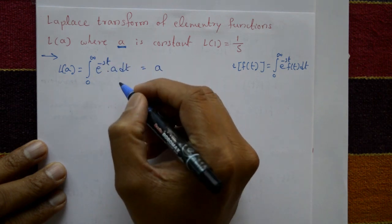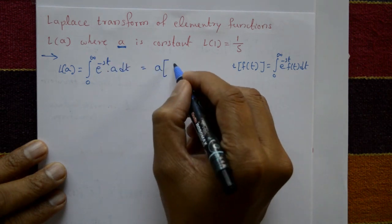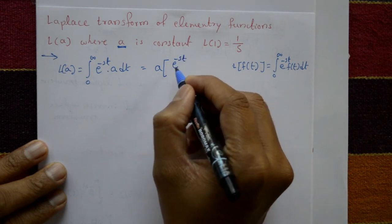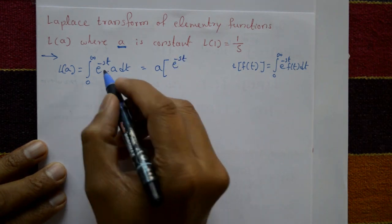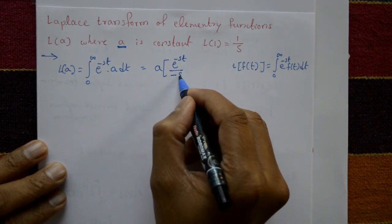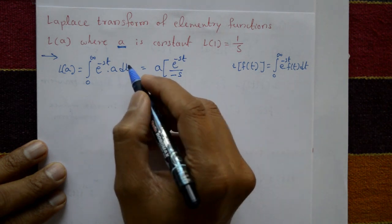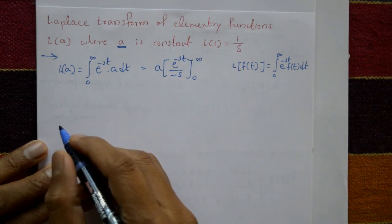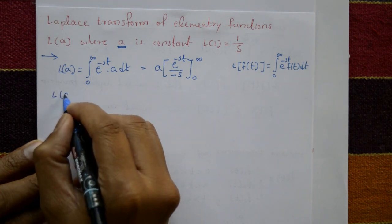Now integration of e to the power minus st with respect to t. Integrate this one: e raised to minus st divided by the constant, the constant means minus s, with the limit 0 to infinity.